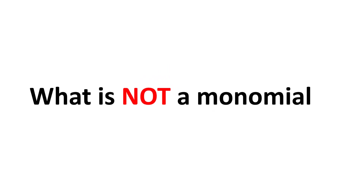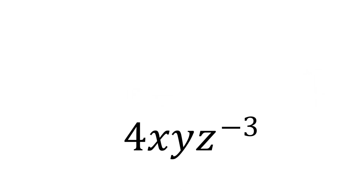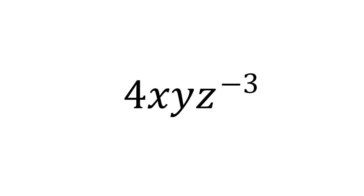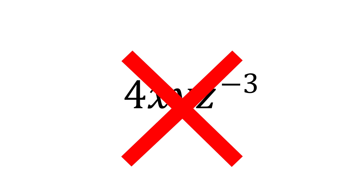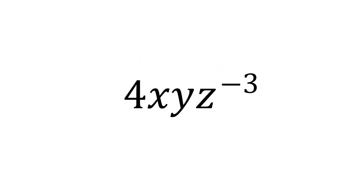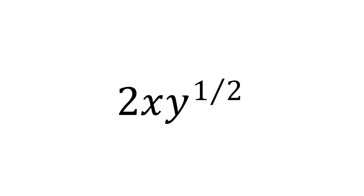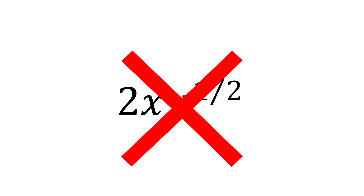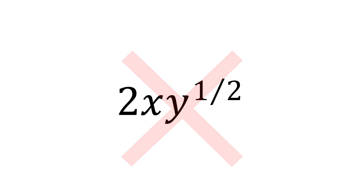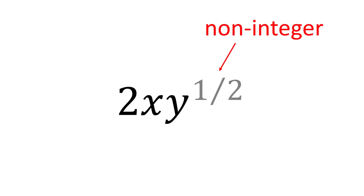Now what is not a monomial? 4xyz raised to negative 3 is not a monomial, because of the negative exponent. 2xy raised to 1 half is also not a monomial, because the exponent is not an integer.